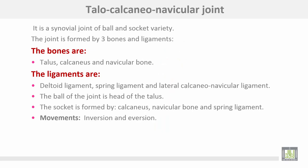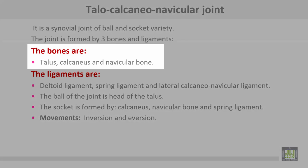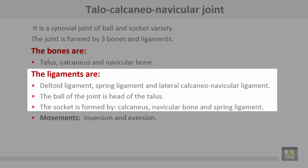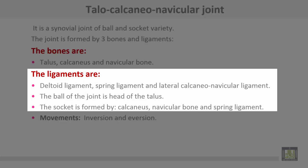The talocalcaneonavicular joint is a synovial joint of the ball-and-socket variety. The joint is formed by three bones and ligaments. The bones are the talus, calcaneus, and navicular bone. The ligaments are the deltoid ligament, spring ligament, and lateral calcaneonavicular ligament. The ball of the joint is the head of the talus. The socket is formed by the calcaneus, navicular bone, and spring ligament.